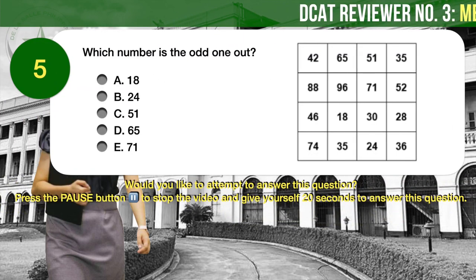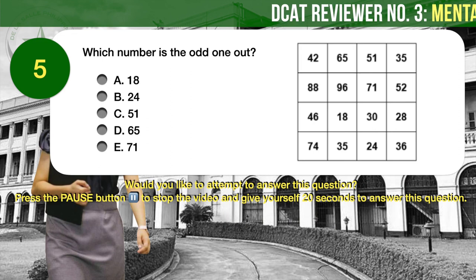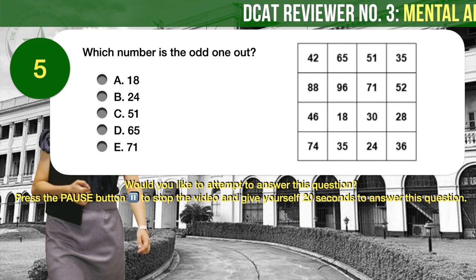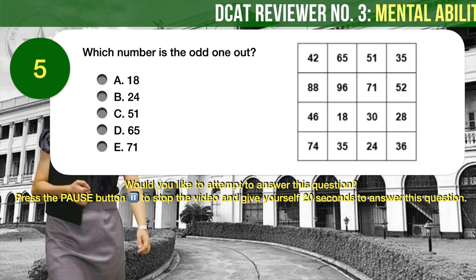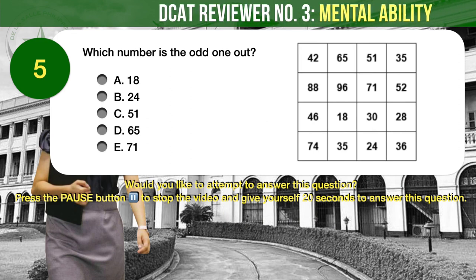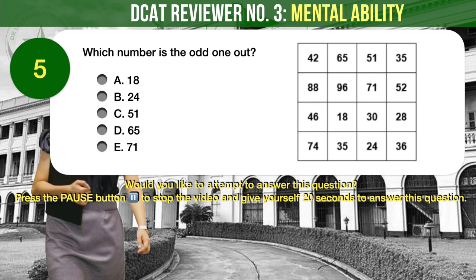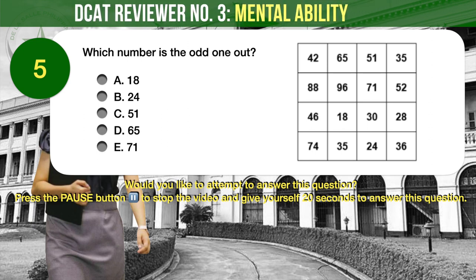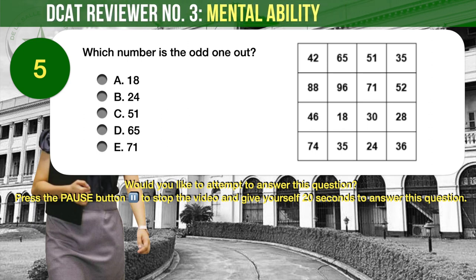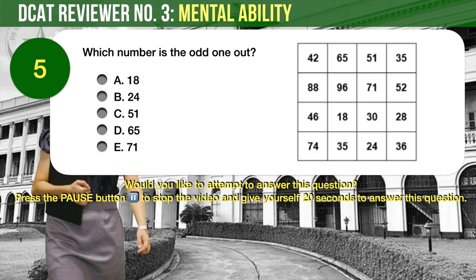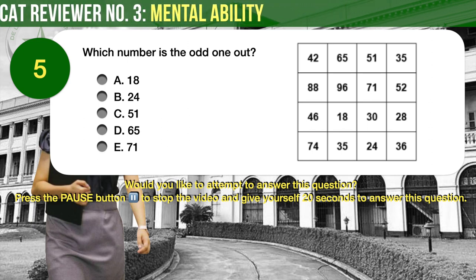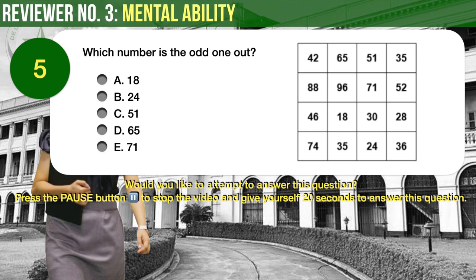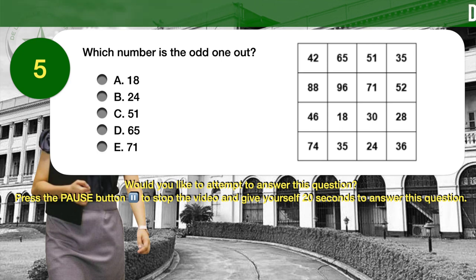Question number 5. Referring to the numbers on the table to the right, which number is the odd one out? A: 18. B: 24. C: 51. D: 65. E: 71.